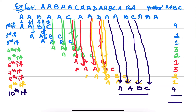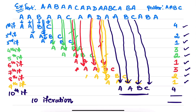So therefore, how many iterations we need? 10 iterations are required for this example. And how many comparisons? 4 plus 2 is 6, 7, 10, 12, 13, 16, 17, 18, 19, and 19 plus 4 is 23 comparisons total.